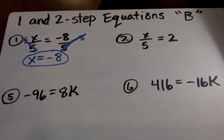You must show your work to get credit for this. You must show the multiply by five on both sides of the equation. Next, we're going to go on to number two. X over five equals two.